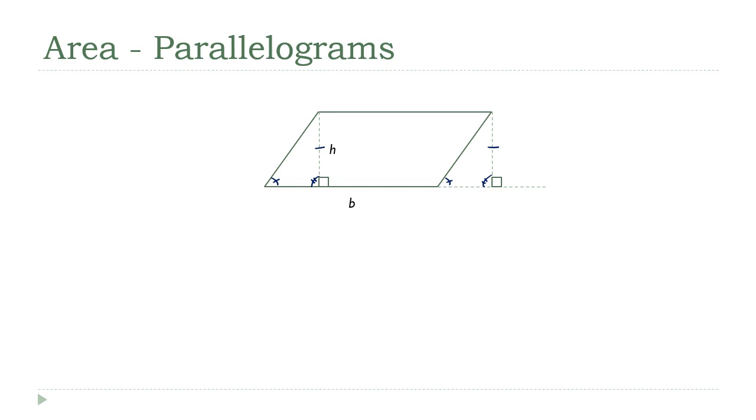If they're congruent, they have the same shape, and if they have the same shape, their areas must be the same. Since the original parallelogram and the rectangle that I formed by repositioning that triangle are made up of the same components, they must have the same area. The area of the rectangle is the base times the height, which means that is our formula for the area of a parallelogram.